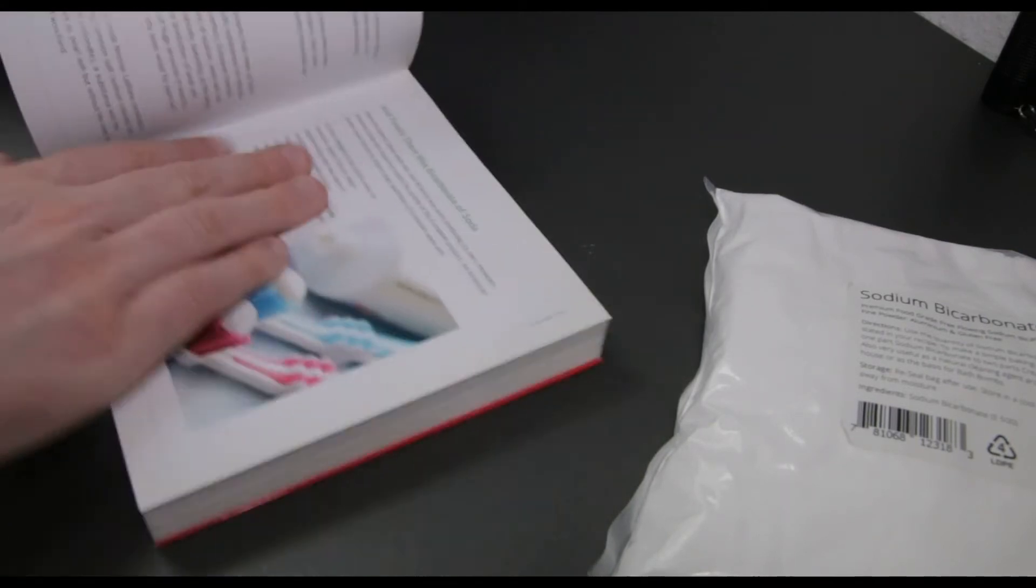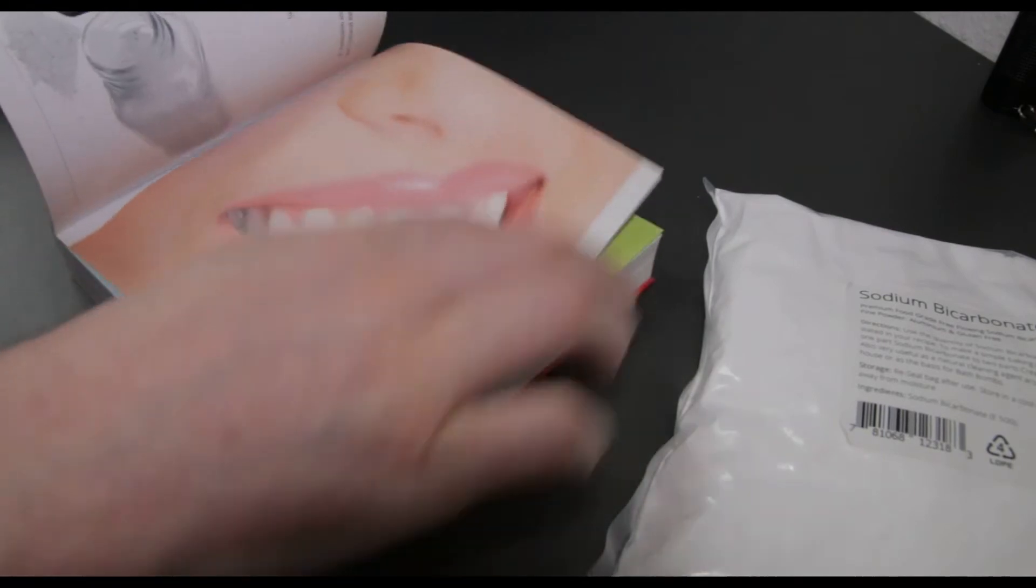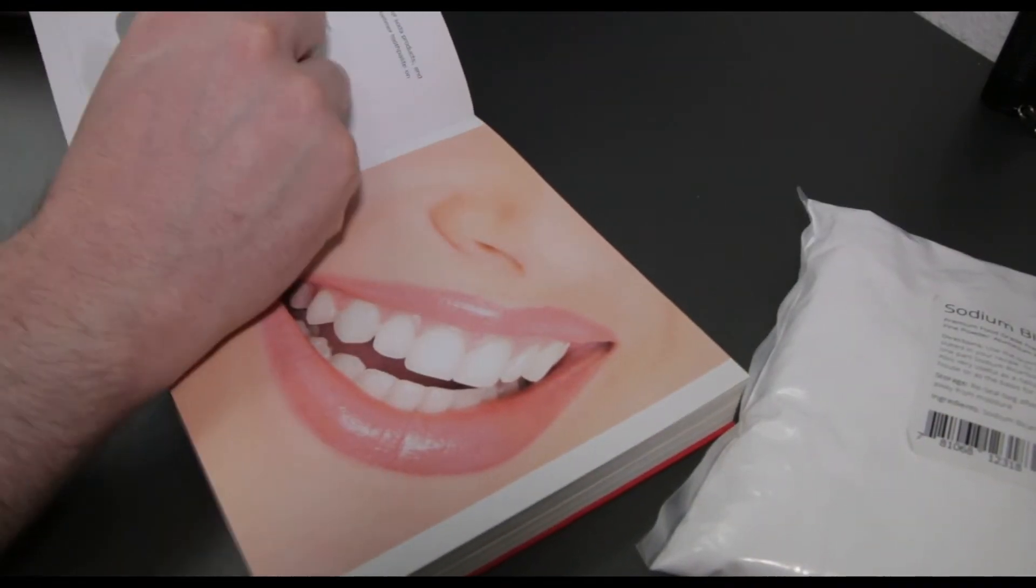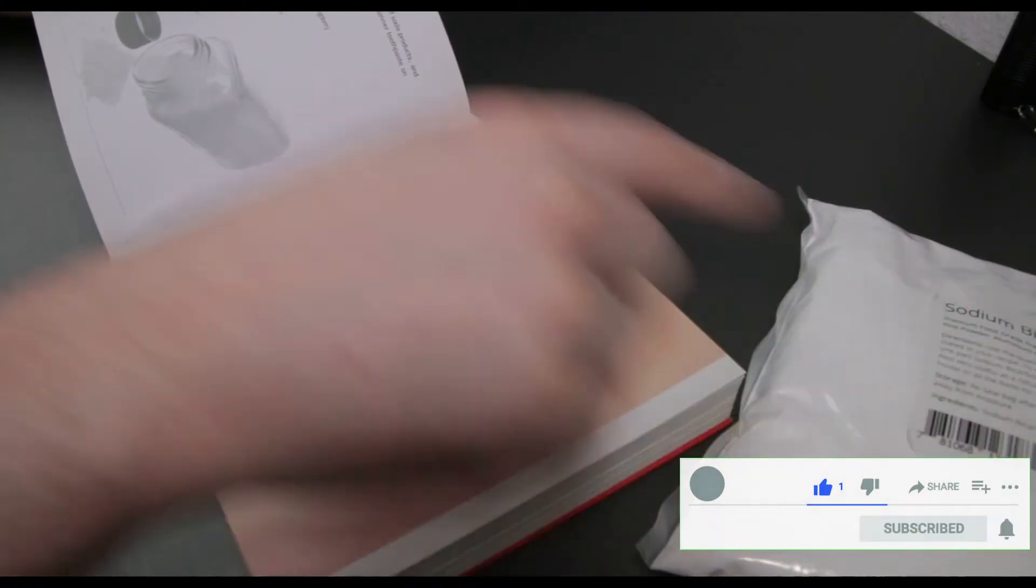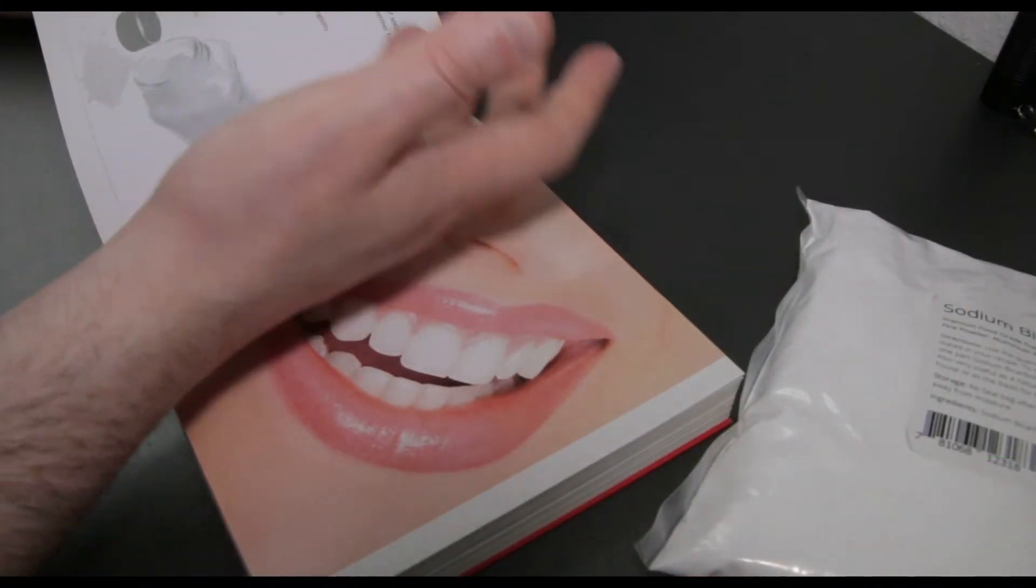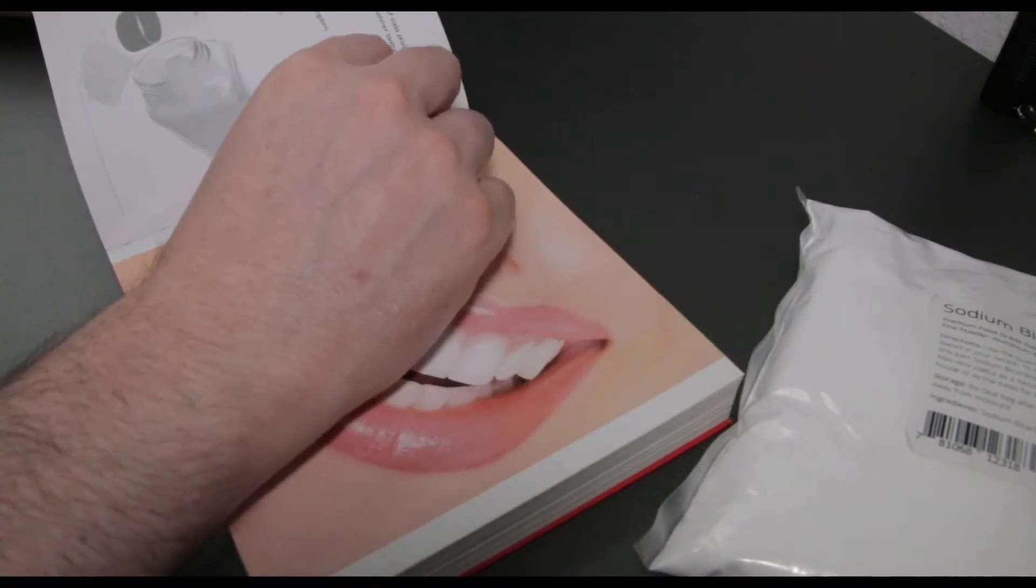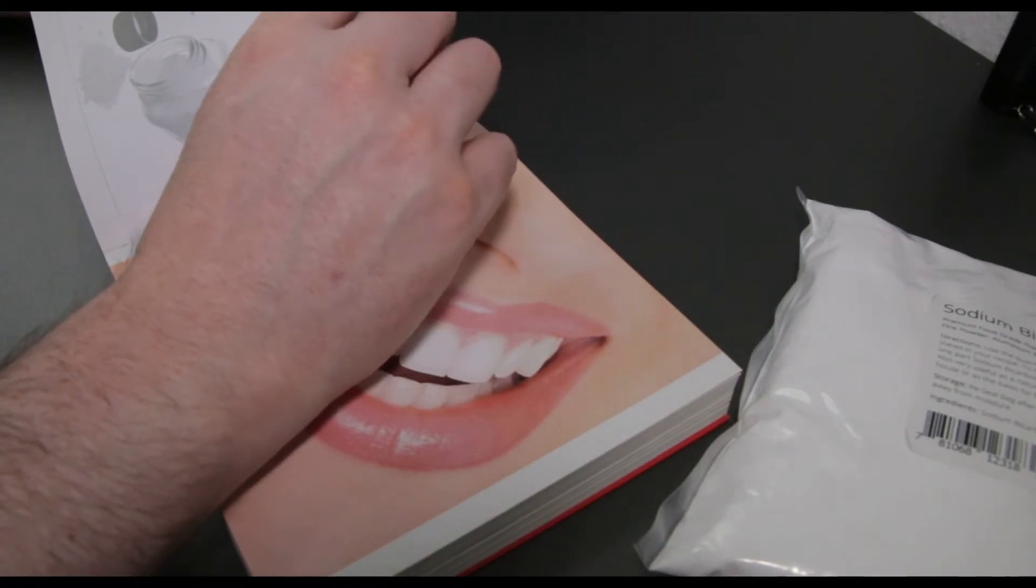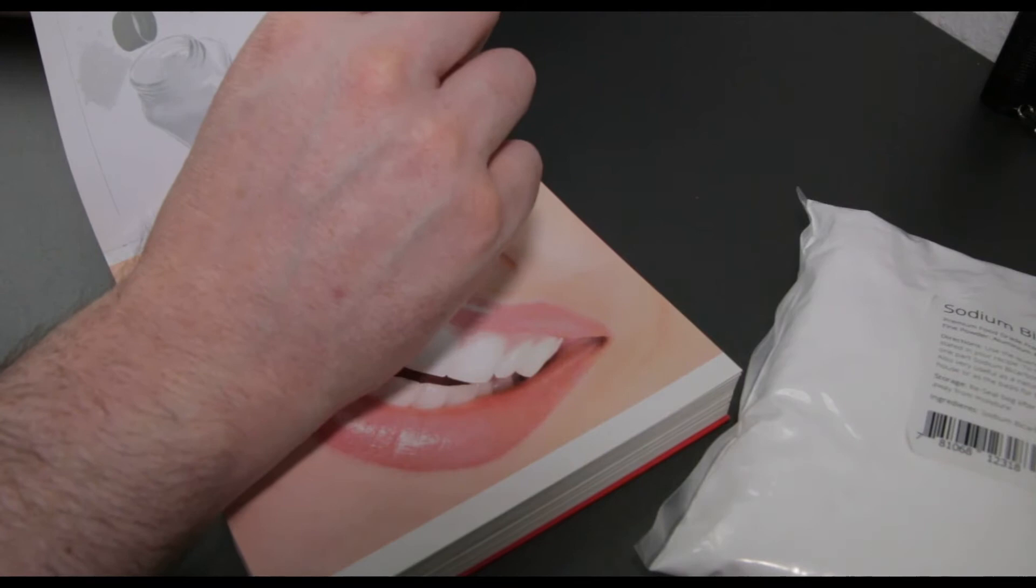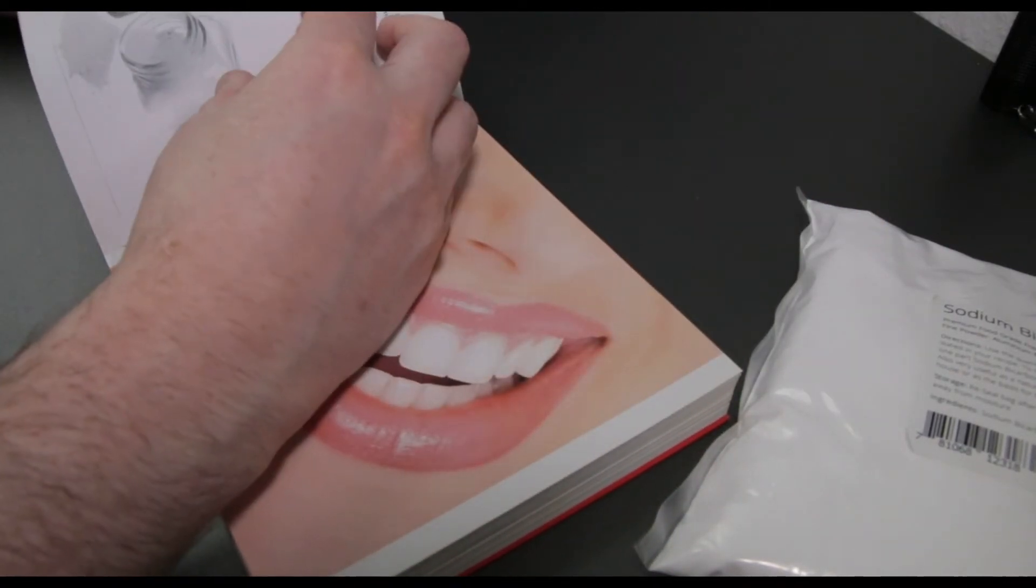It's called by many different names depending on what continent and country that you're in really. But I'll just go through some of them. Bicarbonate of soda. Sodium bicarbonate. That's what this company calls it. Bicarb. It's known as baking soda. Bread soda, especially if you're American. Salaratus. Or you can even call it sodium hydrogen carbonate, which I'm supposing is a scientific name.